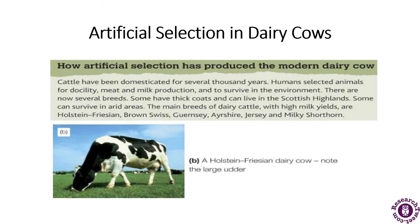Next is artificial selection in cows — how selection has produced the modern dairy cow. Cattle have been domesticated for thousands of years. Humans select these animals for meat and milk production, and there are now several breeds available for milk production and for meat as well. Some have thick coats that can live in the Scottish Highlands and some can survive in arid areas.